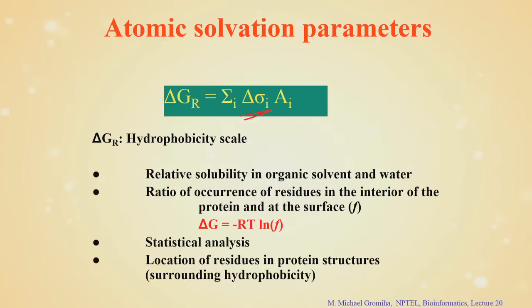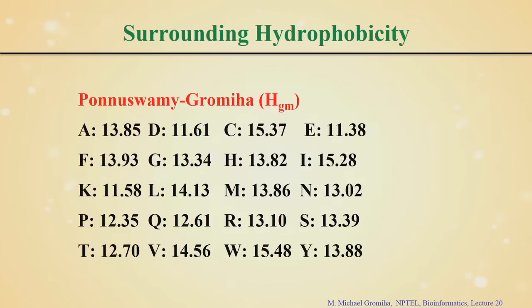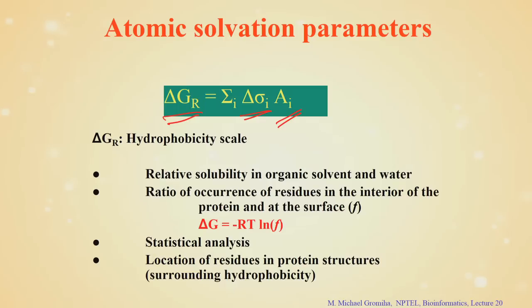We use a linear regression approach: y equals a plus b1 x1 plus b2 x2 up to bn xn, where y is the hydrophobicity, delta sigma_i are the coefficients (b values), and x_i are the solvent accessibilities. We get 20 equations — one per amino acid — and 5 variables: carbon (C), neutral nitrogen-oxygen (N/O), positively charged nitrogen (N+), negatively charged oxygen (O-), and sulfur (S). The matrix dimension is 20 by 5 for the accessibility values, and 20 by 1 for the hydrophobicity values.